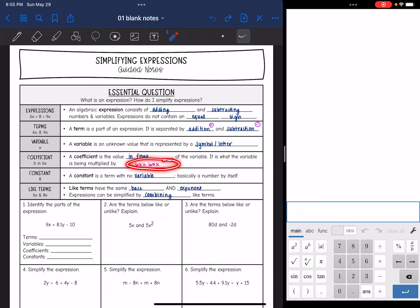So if you have something like 6X, that means 6 times X and the coefficient would be 6. And then a constant is a term with no variable, basically a number by itself, so something like 8. And then if we have like terms in an expression, we can combine them.